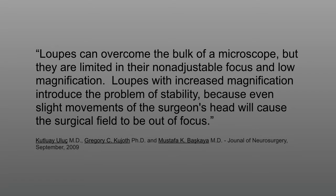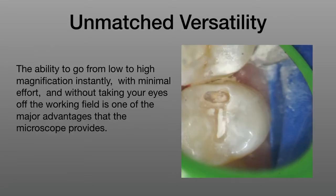Here's a quote from the Journal of Neurosurgery on loops versus microscopes: 'Loops can overcome the bulk of a microscope but are limited in their non-adjustable focus and low level magnification. Loops with increased magnification introduce the problem of stability because even slight movements of the surgeon's head will cause the surgical field to be out of focus.' During a procedure, you can switch the microscope from a large field of view with low magnification to a small field of view with high magnification. This provides unmatched versatility to go from low to high magnification instantly with minimal effort, without taking your eyes off the working field — one of the major advantages the microscope provides.